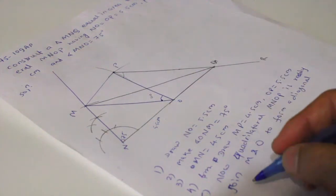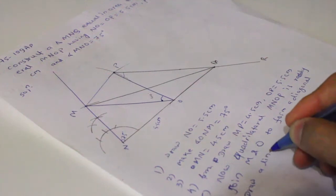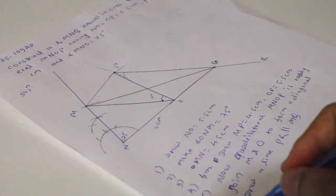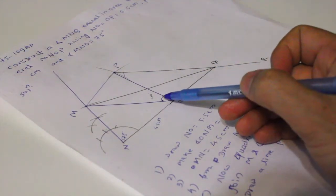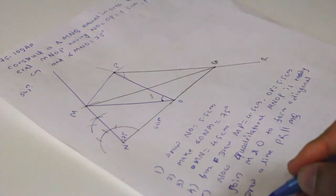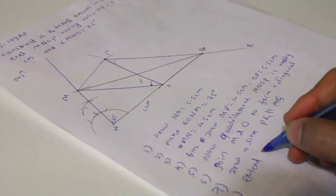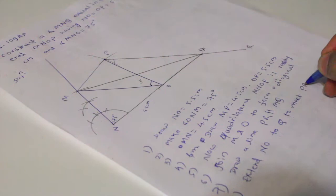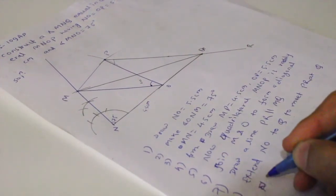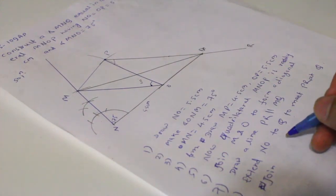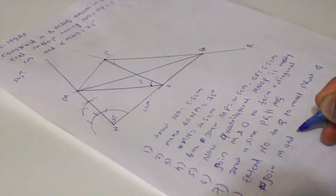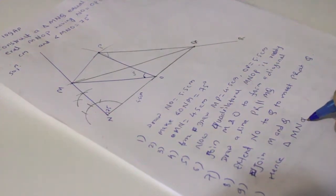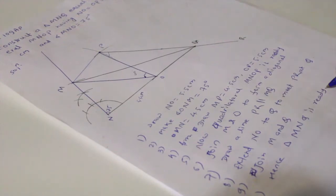Number seven, draw a line PR parallel to MO. And then eight, so you have to do here, this angle equals to this angle. Now extend NO to Q to meet PR at Q. Number nine, join M and Q, hence triangle MNQ is ready. That's your answer.